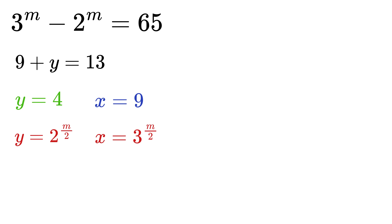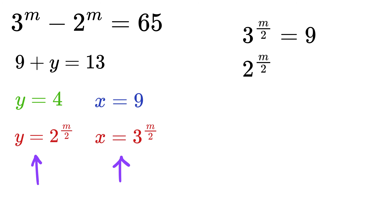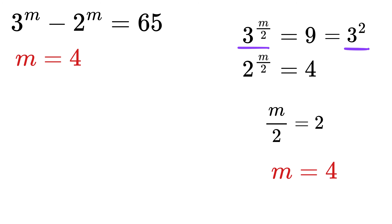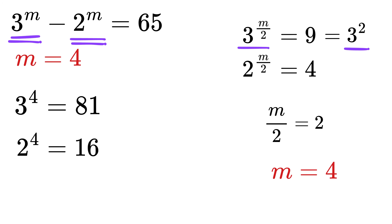The final trick is to remember what x and y actually were. We had x as 3 raised to power m over 2, and y as 2 raised to power m over 2. So now we know 3 raised to m over 2 is 9, and 2 raised to m over 2 is 4. Since 3 raised to m over 2 is 9, which equals 3 squared, equating the exponents gives m over 2 equals 2, or m equals 4. Let us verify: 3 raised to 4 is 81, and 2 raised to 4 is 16, so 81 minus 16 is 65.